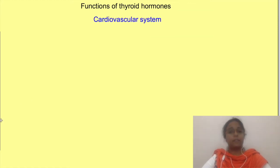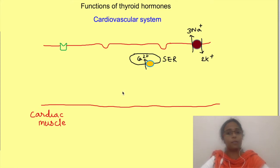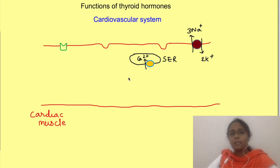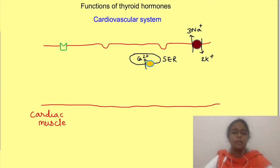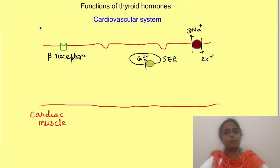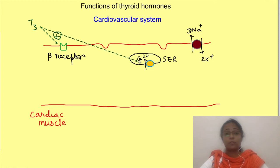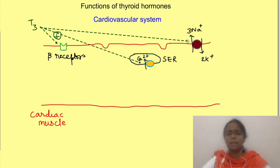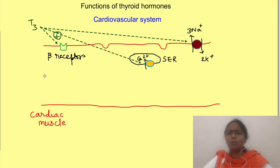Another significant direct effect is on the cardiovascular system. By virtue of increased metabolic activities, there is an increase in cardiac activity. However, thyroid hormones also have a permissive action on the heart — they increase the responsiveness of the heart to catecholamines by increasing the expression of their receptors, i.e., beta-adrenergic receptors. They also increase the expression of proteins involved in excitation-contraction coupling in the heart, including smooth endoplasmic reticulum calcium ATPase, sodium-potassium ATPase, and others.